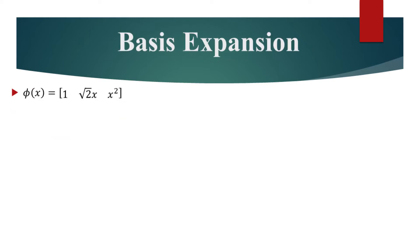Consider a function phi that maps a scalar to a vector with three elements as follows. If we transform each data point in this way, we will get the following data. Now, each data point has three features.